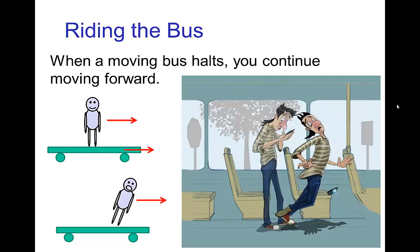Here's an example of where we might see the law of inertia in practice. Let's say you're standing on a bus and are distracted, and the bus is moving along, but then it comes to a sudden stop. You're moving and you continue moving until there's an unbalanced force that brings you to a stop. Because you continue moving, you are seemingly thrown forward, but in reality what is happening is you are continuing to move according to the law of inertia.